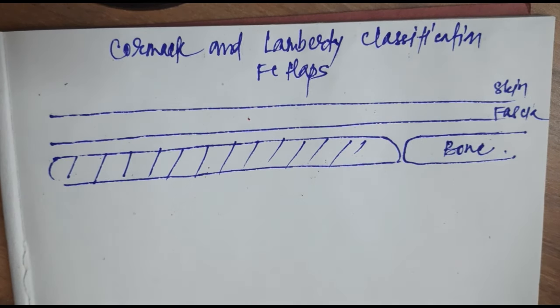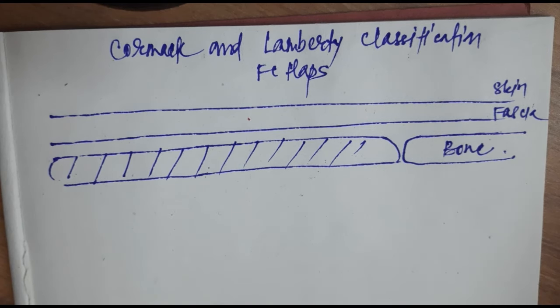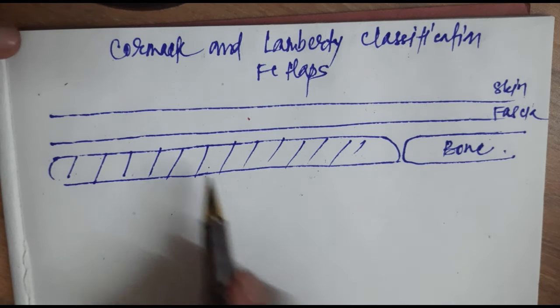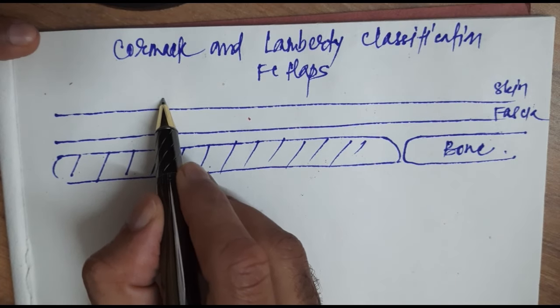Now Cormack and Lamberti have classified the fasciocutaneous flaps into four types: A, B, C, and D.